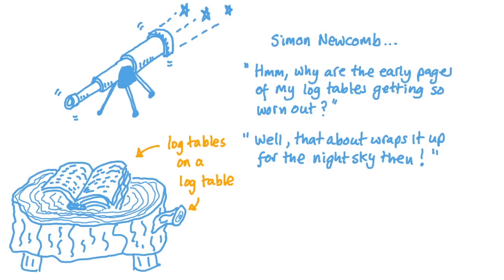Later in his career, he suggested that astronomers were almost at the stage where they'd found out everything they could about the night skies, and he was very wrong about that, but he was right about the uneven distribution of first digits.